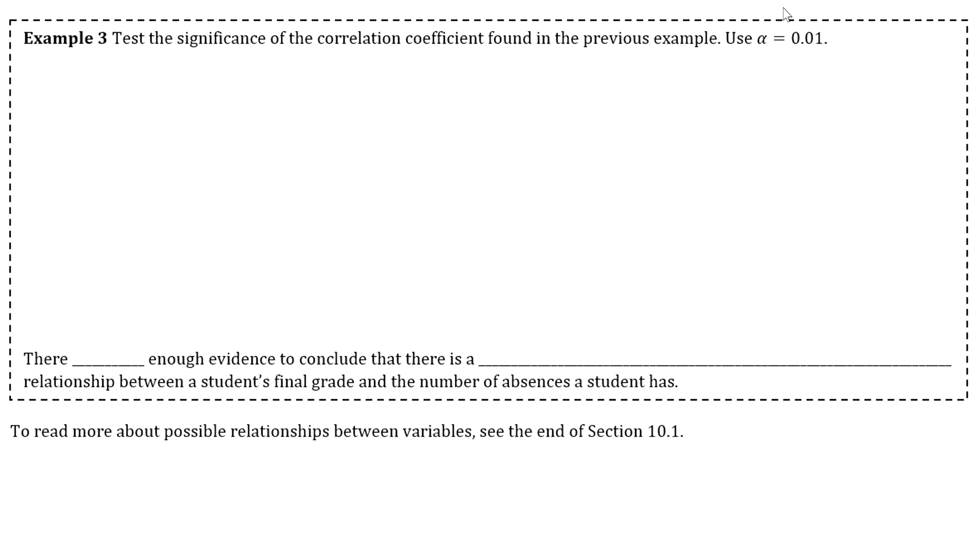Example 3 says to test the significance of the correlation coefficient found in the previous example and our level of significance, alpha, is 0.01. So your first step for your p-value method is to state your hypotheses. They're always going to be the same thing when you're doing this type of test. Your null hypothesis is that rho equals 0. Your alternative is that rho does not equal 0.